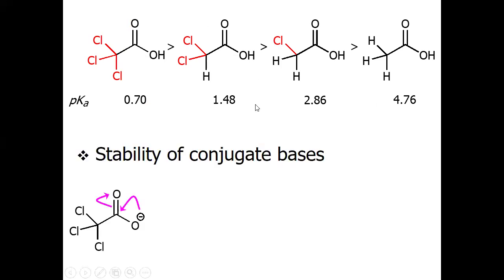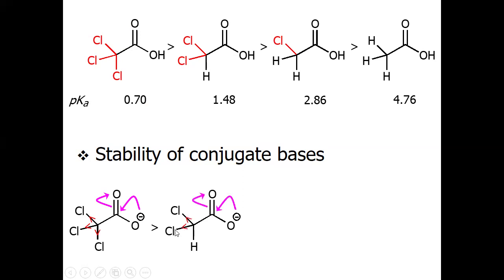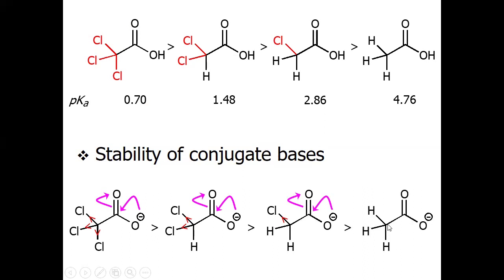The conjugate structure after removing the proton from trichloroacetic acid shows three electron-withdrawing groups attracting electrons and making this carbon more reactive. In dichloroacetic acid only two groups withdraw electrons, in chloroacetic acid only one chlorine withdraws electrons, and in acetic acid there is no withdrawing group at all. That is why acetic acid has the least stable conjugate base and trichloroacetic acid has the most stable — it is the most acidic in the series.